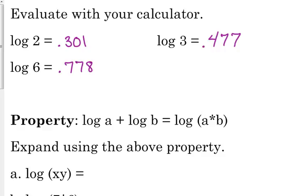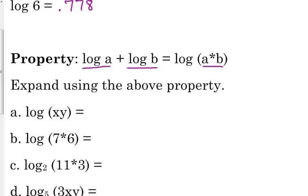So there's our next property. When you are adding two logarithms, as long as they have the same base, then you can combine them into a single logarithm and you multiply what was inside the two logs. So log of a plus log of b is equal to the log of a times b. We can use that both ways. We can separate it or we can put it together. So the first thing we're going to do is expand these logarithms.